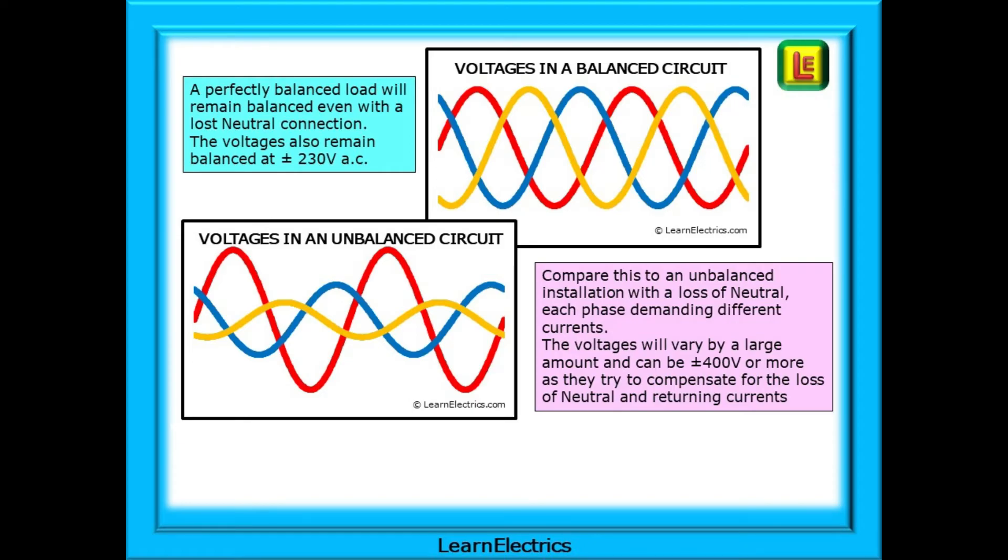A motor circuit might be a typical example as displayed on the top chart. Let us compare this to an unbalanced installation with a loss of neutral, where each phase is demanding different currents because the loads on each phase are all different. One phase might be feeding the lights, another phase will supply power to the kitchen ovens, and the third phase is fed to the offices. With a loss of neutral, the voltages can vary by significant amounts as shown on the lower chart.